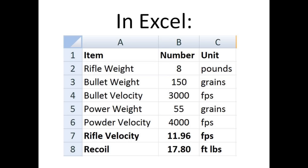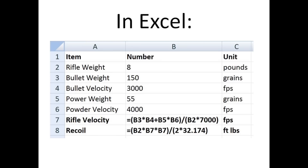The .30-06 example we worked is set up in Excel, which is shown here on the next slide with the full equation. It's pretty easy to set up in Excel, and once you do, you can easily compare scenarios — like a 7-pound rifle versus a 9-pound rifle. Thanks for watching, and happy New Year's.